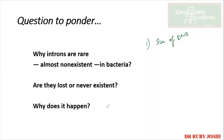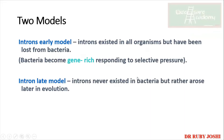Two models explain exon shuffling evolution: the introns-early model says introns existed in all organisms but were lost from bacteria due to natural selective pressure — bacteria became gene-rich organisms. The introns-late model says introns never existed in bacteria but arose later in evolution as diversity increased. These are hypotheses — there is no hardcore experimental evidence to prove either.